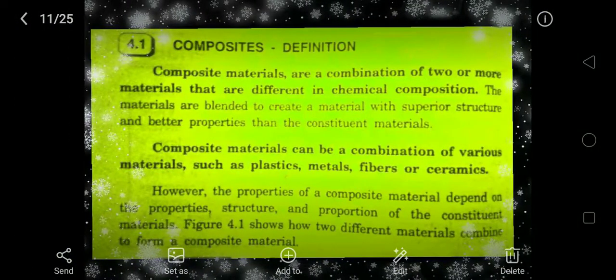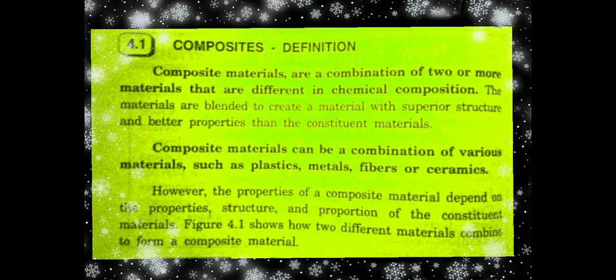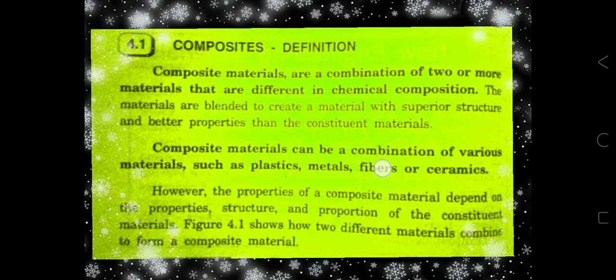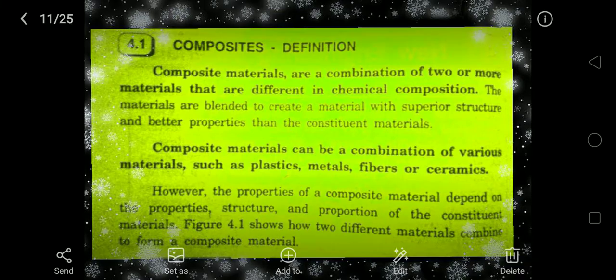First, what does composite material mean? It is a combination of two or more materials with different chemical compositions. The reason for choosing two or more materials of different chemical composition is that it will give better properties than the original constituent material. Composite materials may be a combination of plastics, metals, fibers, or ceramics.